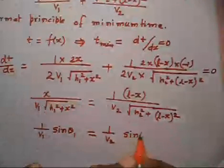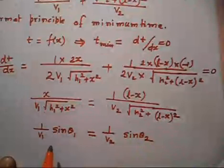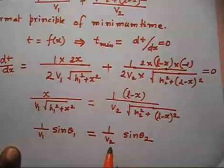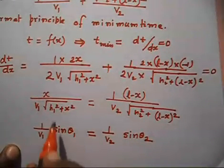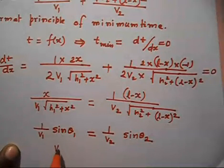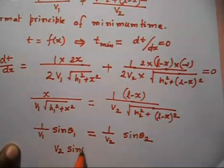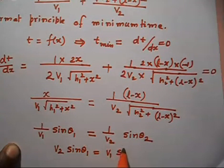Therefore, sin θ1 / V1 = sin θ2 / V2, which can be rewritten as V2 · sin θ1 = V1 · sin θ2.